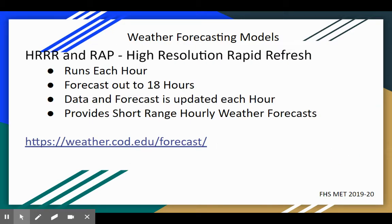The other short-range models we use in class are the High-Res, also called the HRR, and the RAP, or Rapid Refresh. These are good for really short-term forecasting. The High-Res and Rapid Refresh run every hour, so a new forecast is produced each hour. They can forecast up to 18 hours out, and the data is updated hourly to provide a short-range hourly weather forecast.